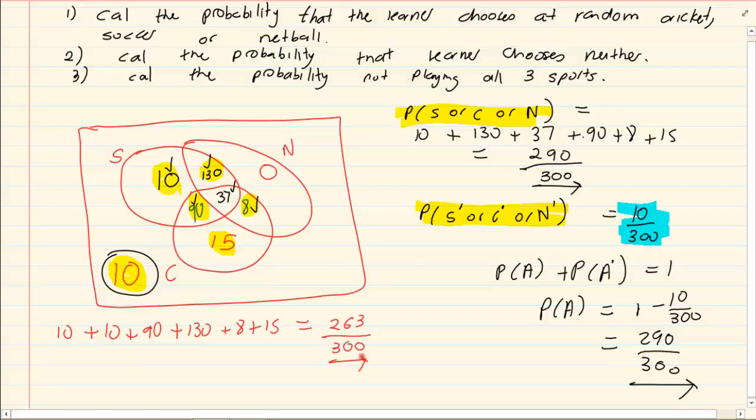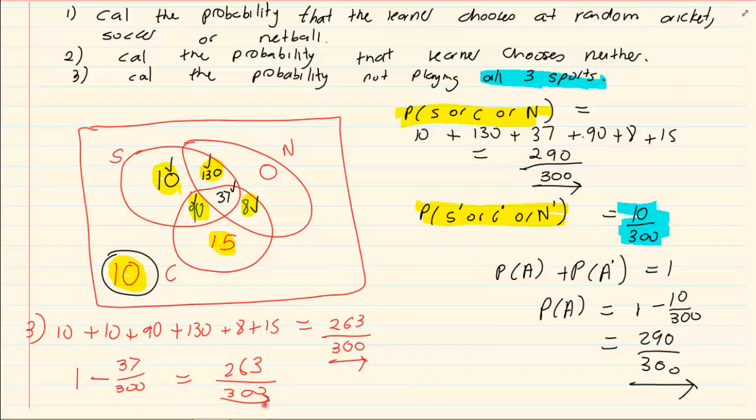But an easier way would have been to say, okay, what is the probability of them playing all three sports? All three sports is 37. All three sports is simply 37. So, if I want the probability of not playing all three sports, it would be 1 minus 37, which is equal to 263 over 300. This helps you in not doing long sums and simply getting to the answer faster.